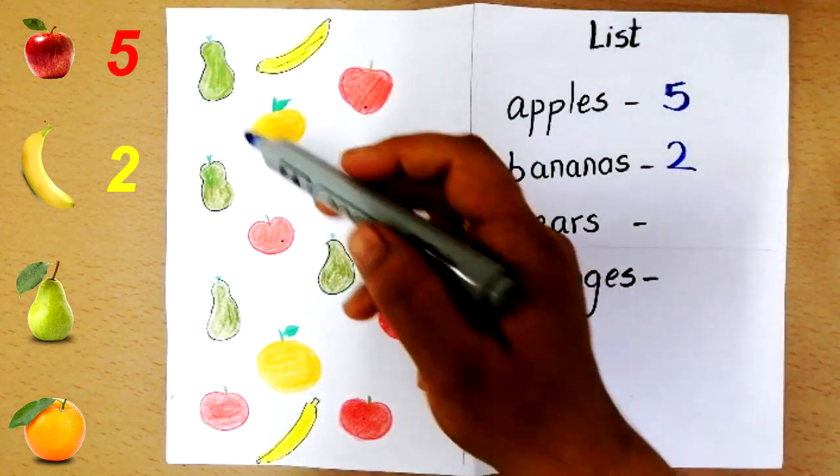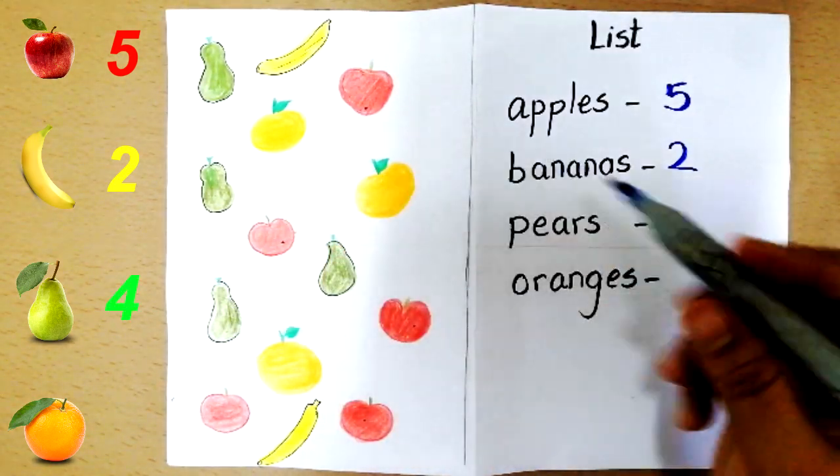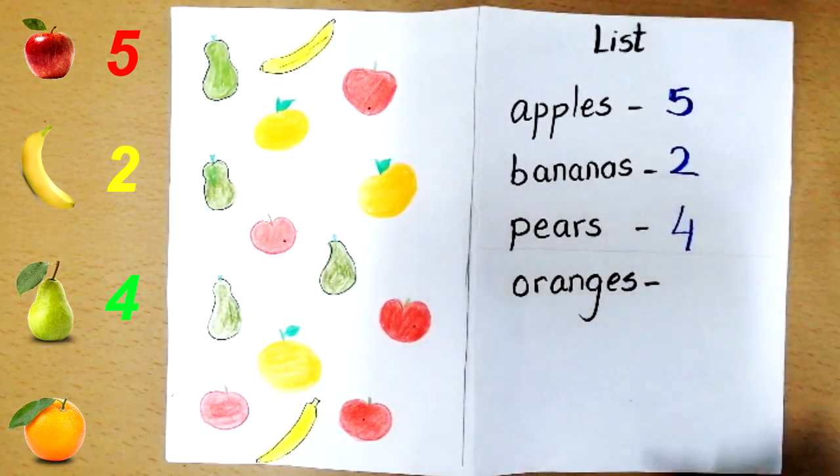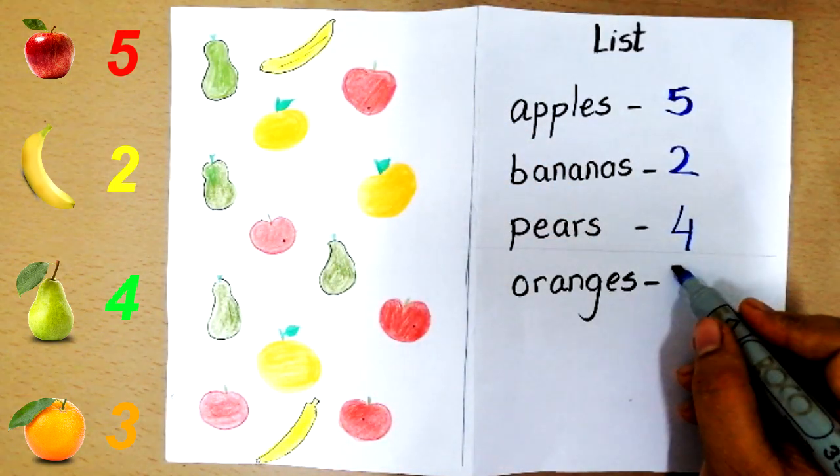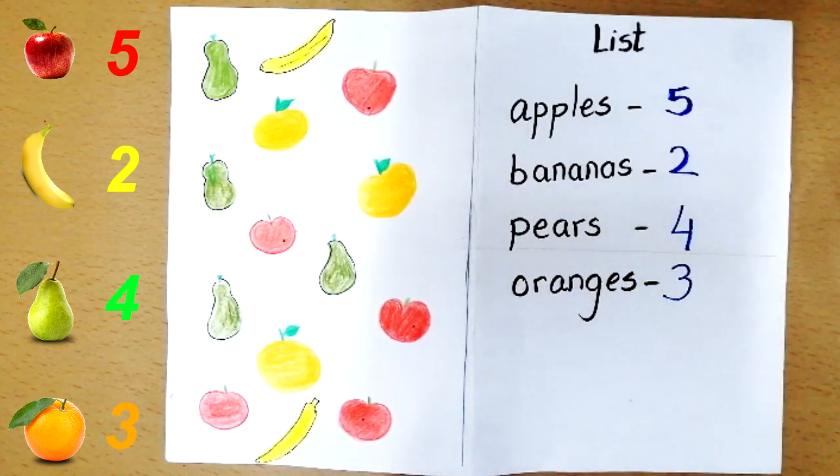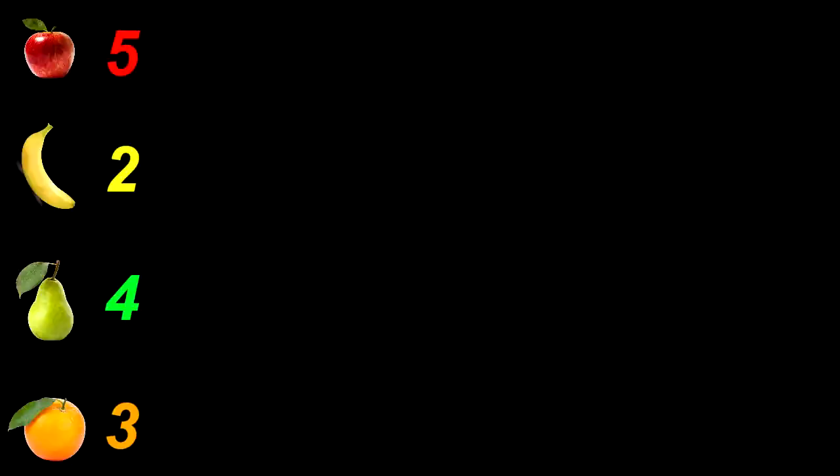The third one is pears and you need one, two, three, four, four of them. The fourth one is oranges and you need one, two, three, three of them. Now your shopping list is ready.